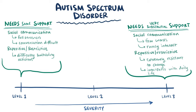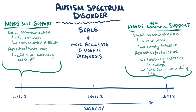It's thought that using this scale of symptoms, as opposed to differentiating between pervasive developmental disorders, will help give a more accurate and medically useful way to diagnose individuals. For example, those with what was previously described as Asperger's syndrome would likely fall closer to severity level 1 than severity level 3.